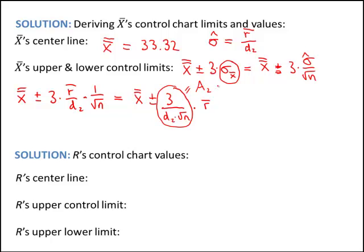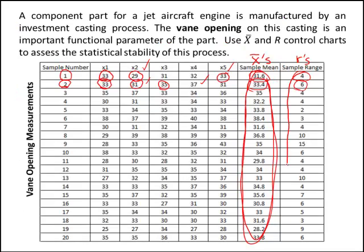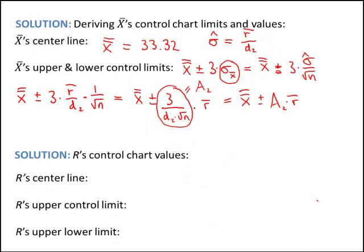So the formula becomes x-bar-bar plus or minus A2 times R-bar. I went ahead and calculated R-bar earlier: I added all the sample ranges up, divided by 20, and got R-bar equals 5.8. For a subgroup size of 5, the control chart constant table gives A2 equals 0.577.